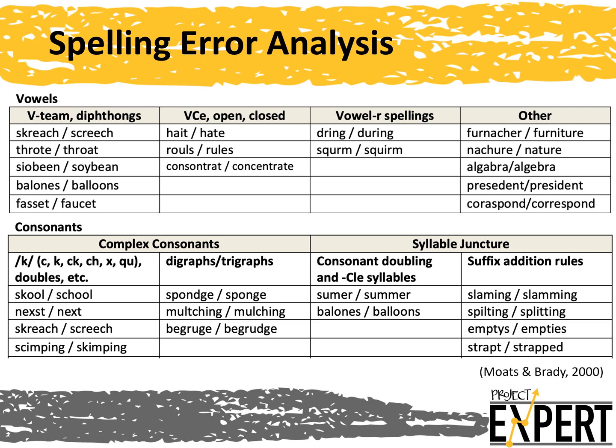Another option for an informal diagnostic assessment is a spelling error analysis. Spelling and word reading share many sub-skills in common. For example, phonemic awareness, phonics skills, and morphemic awareness are integral to both spelling and word reading. Therefore, assessing spelling errors can reveal a lot about reading skills. On the left of each cell is an example error in that category with the correct spelling on the right. For example, a student spelling 'hate' like H-A-I-T may be unfamiliar with VCE patterns. An advantage of administering spelling error analyses is that, unlike ORF error analysis, a teacher can administer spelling error analyses to a group of children at one time.